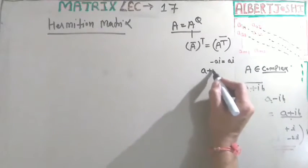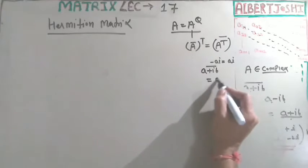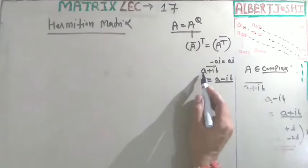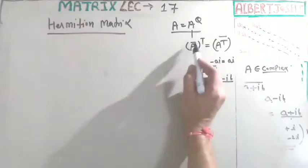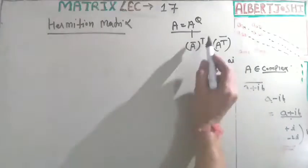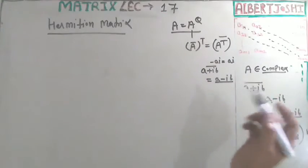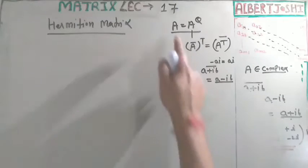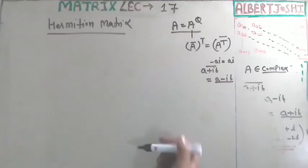So if you have A plus iB, the conjugate is A minus iB. There is no effect on real numbers. The transpose means converting rows to columns. So if A equals A-theta, we say this is the Hermitian matrix.